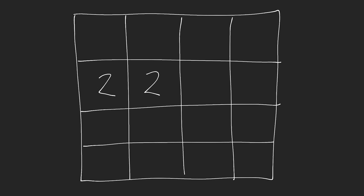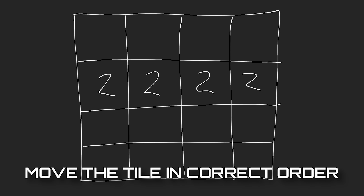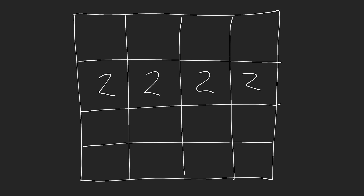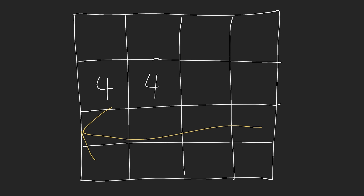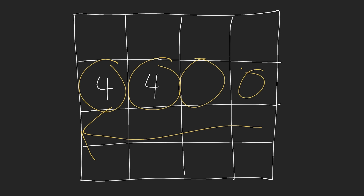So to summarize the edge cases: moving with nothing in the way means the tile shifts to the border; a blocking tile of different value means no movement; a matching tile triggers a two-phase merge — first animate into the square, then combine values and remove the old tile. Crucially, when moving left, we process tiles starting from the leftmost first to ensure merges happen correctly and don't cascade unexpectedly.